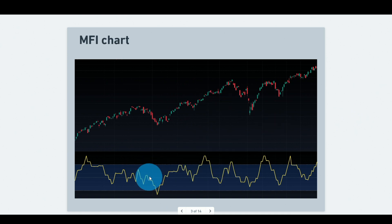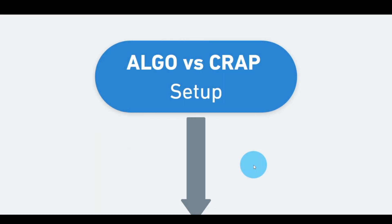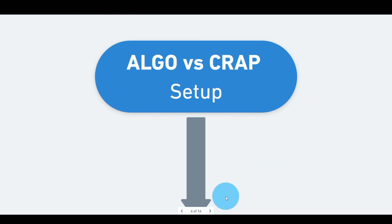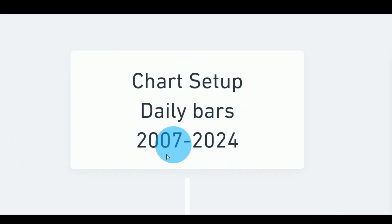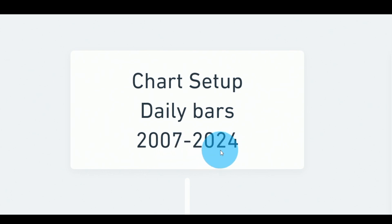On the chart it looks just like the RSI — it has an overbought zone and an oversold zone. Now that we have the indicator equation defined and understand how it works, let's take it through the Algo vs Crap workflow. The setup starts with the data history: for all indicators tested, we start from 2007 or 2006 depending on the market, all the way to the current date in 2024.